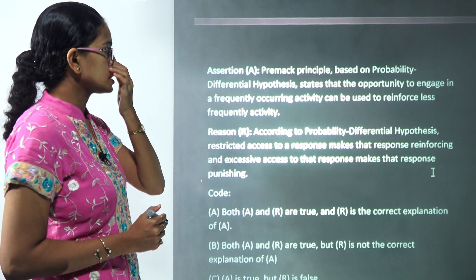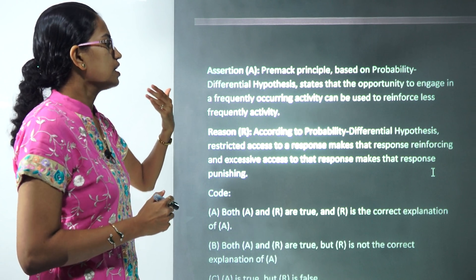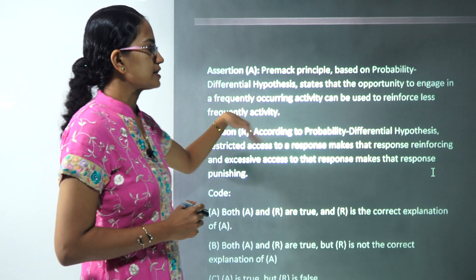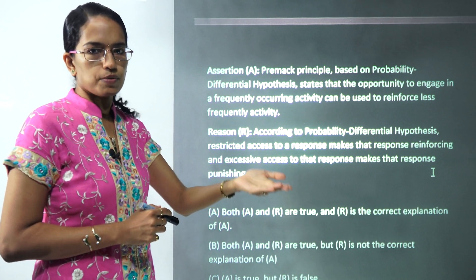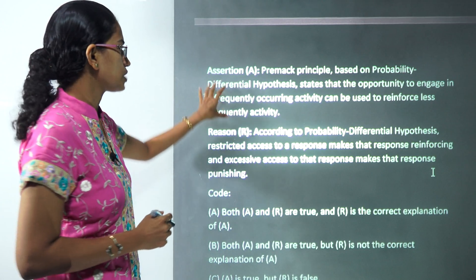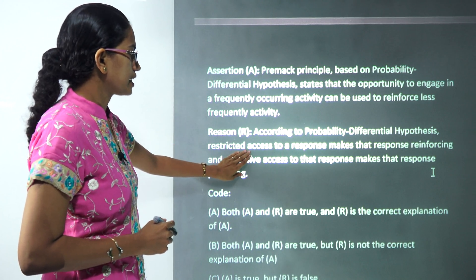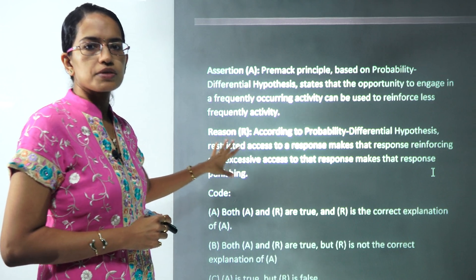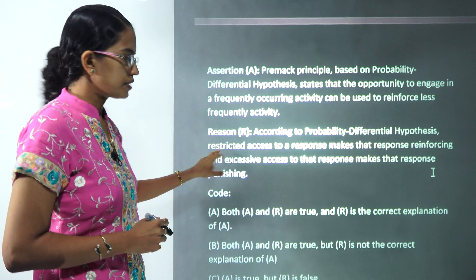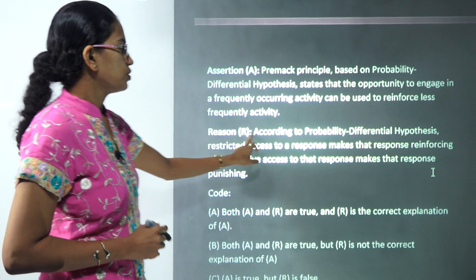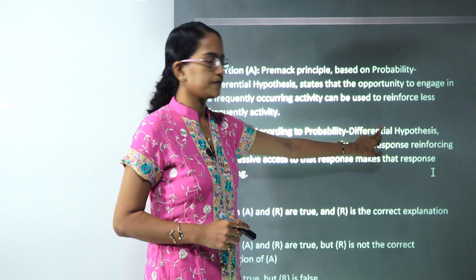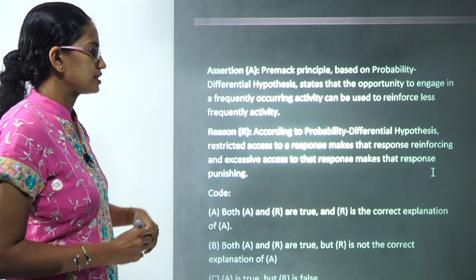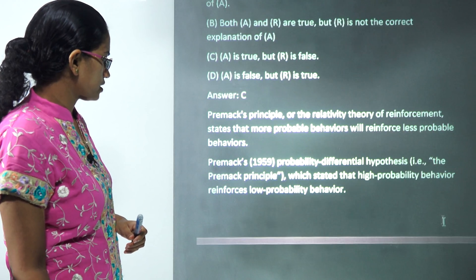The next question covers the Premack principle, also known as the probability differential hypothesis, which explains that frequently occurring activities can be used to reinforce less probable activities — that's correct. However, the second statement describes the reinforcement theory given by Timberlake, not the probability differential hypothesis. So reason is incorrect and assertion is correct.